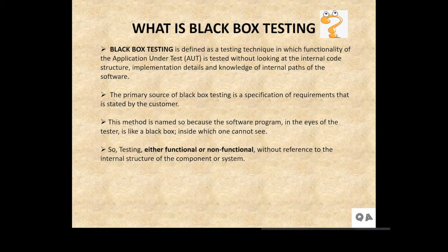In this testing, the internal structure or design or implementation of the item being tested is not known to the tester. The primary source of black box testing is a specification of requirements that is stated by the customer. This method is named so because the software program in the eyes of the tester is like a black box inside which one cannot see. Without knowing any of the internal structure, the testing is being done. It's testing either functional or non-functional without reference to the internal structure of the component or system.